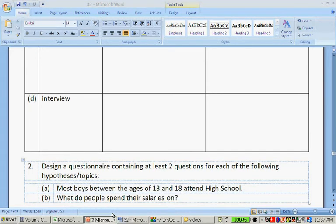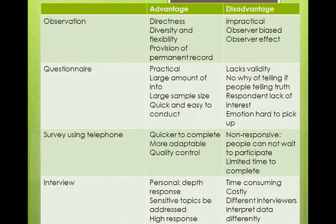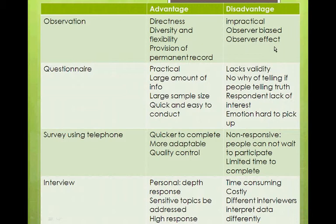Let's go through those answers. For observation: advantages are that it's direct, diverse and flexible, and there is provision of a permanent record. The disadvantage is it can be impractical, the observer can be biased — for instance, some people will think somebody is quite tall and others will say they are actually quite average — and there is also the observer effect. It is also quite time-consuming because you have to sit at a certain spot for a long period of time.